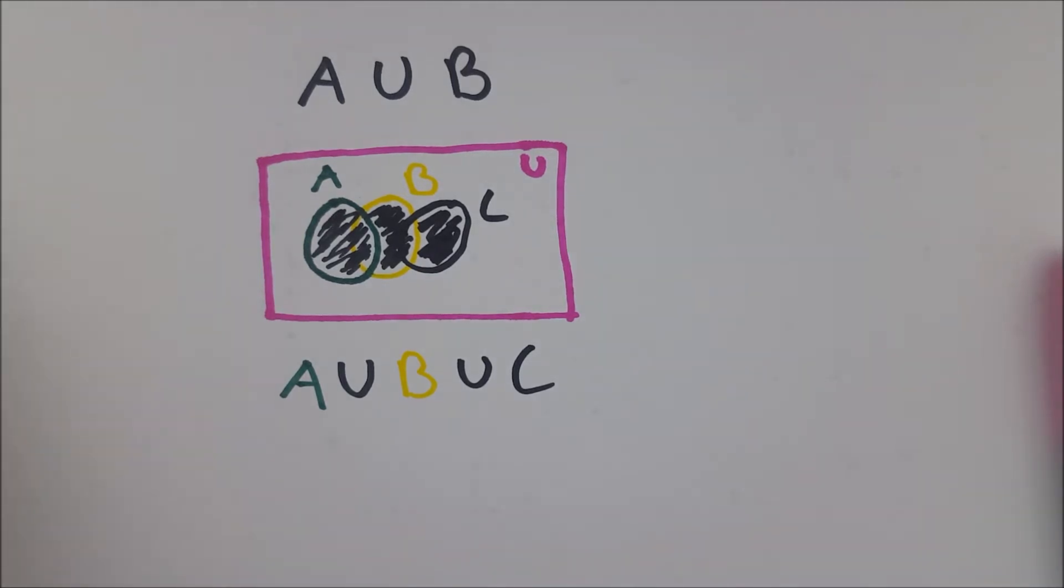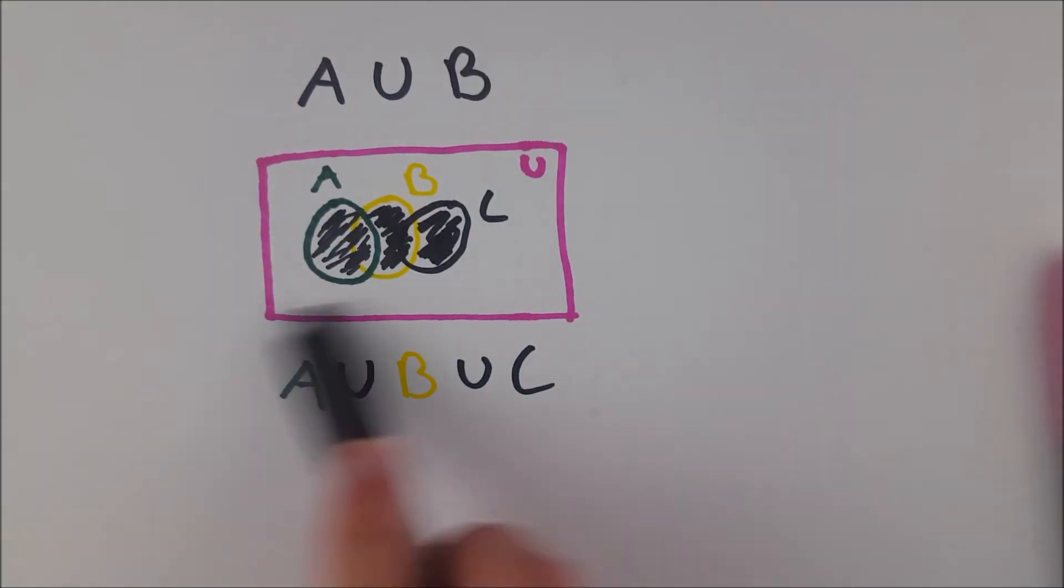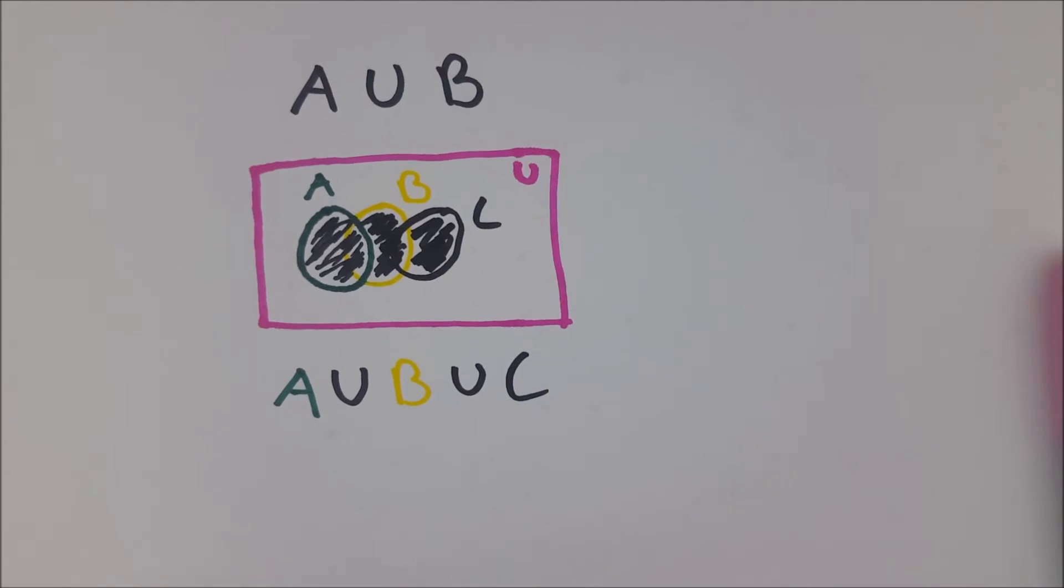Hope this video helped you understand how to represent the union of two sets using a Venn diagram. Venn diagrams can be very helpful for representing sets and a large combination of set operations. So I hope this gets you on your way to writing them out using Venn diagrams.